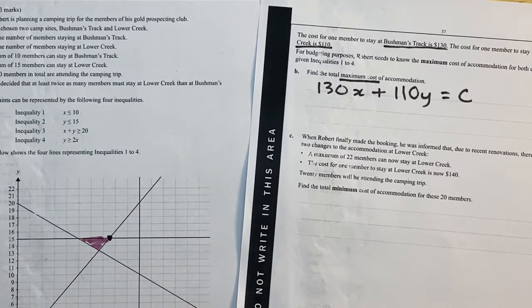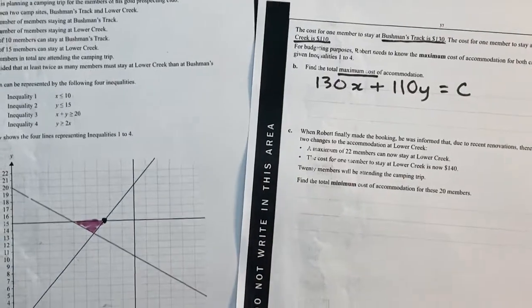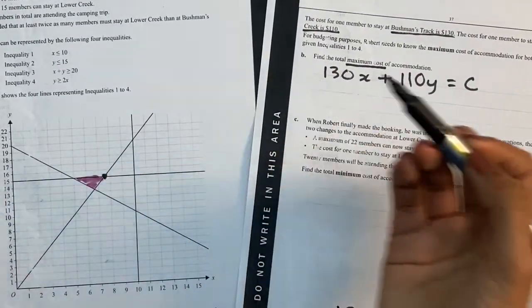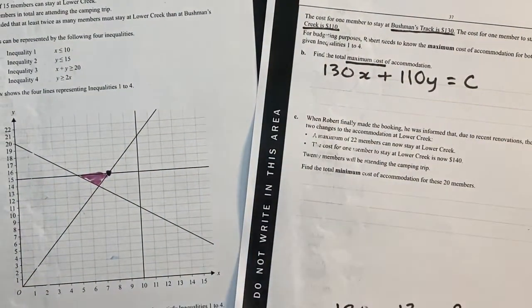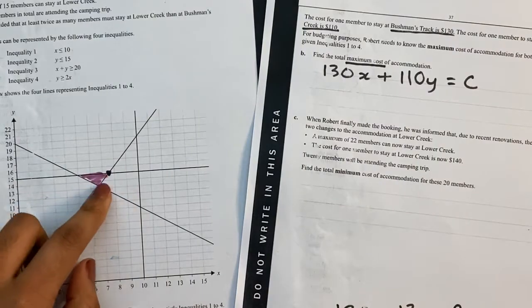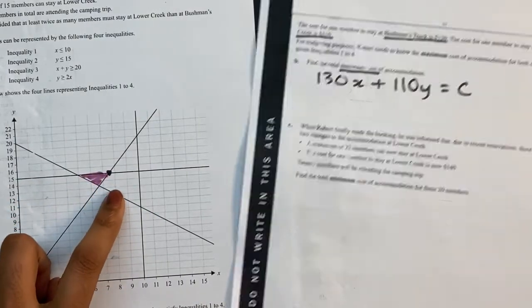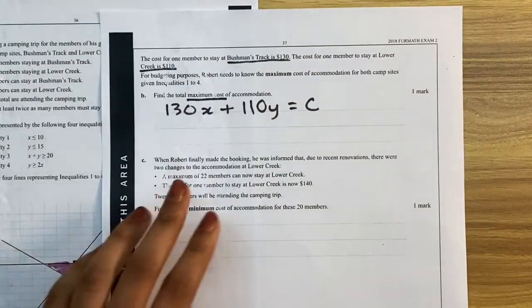So the total maximum cost is going to occur at this point here. So then what you'd have to do is just find out what are the coordinates of this point, and then you just substitute these points into this. I'm not going to show you how to do that because I'm sure you already know. This is faster than the other method because instead of having to substitute all the values of this feasible region in, we just have to substitute that one value. And that is how to use the sliding line method.